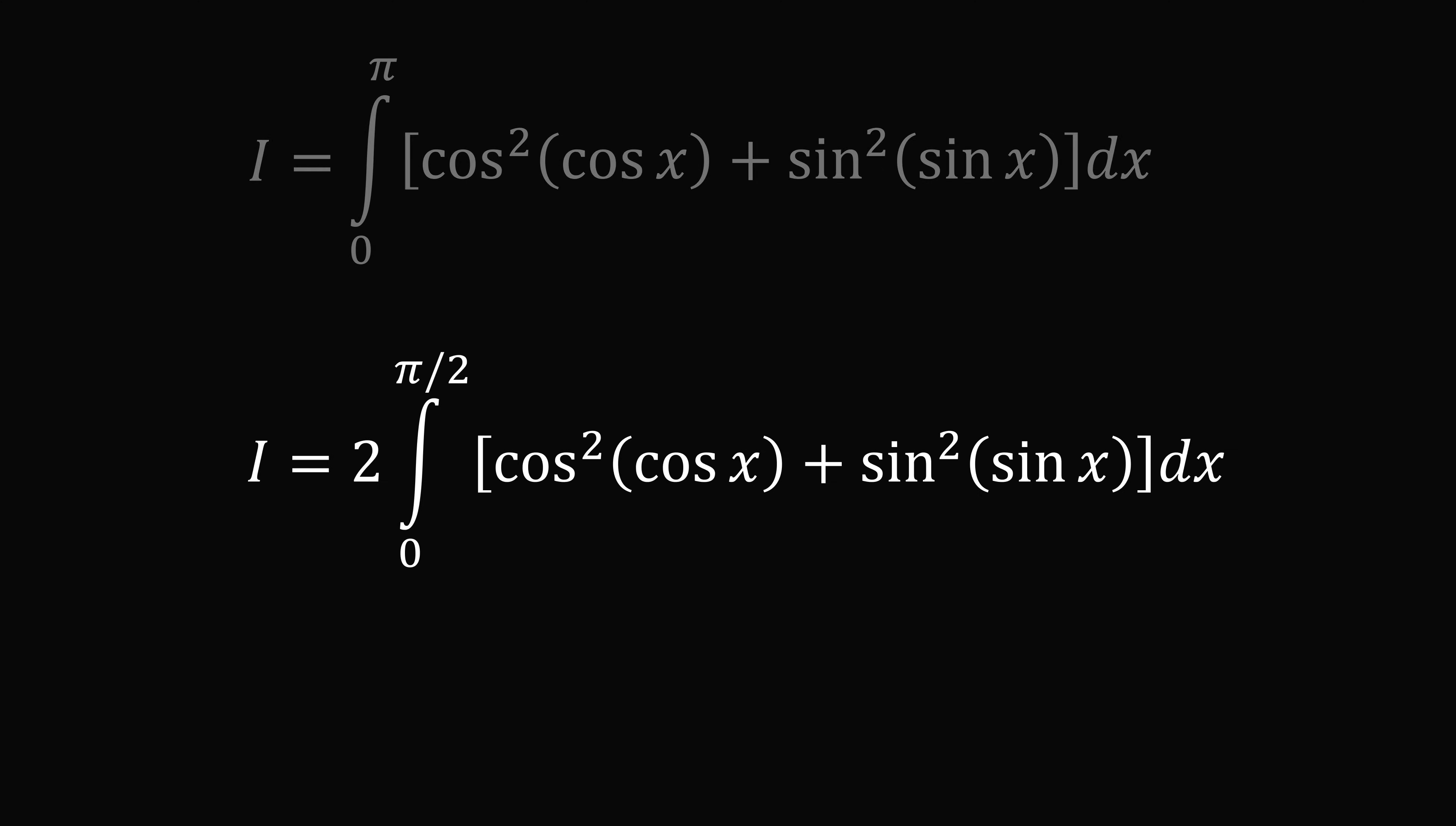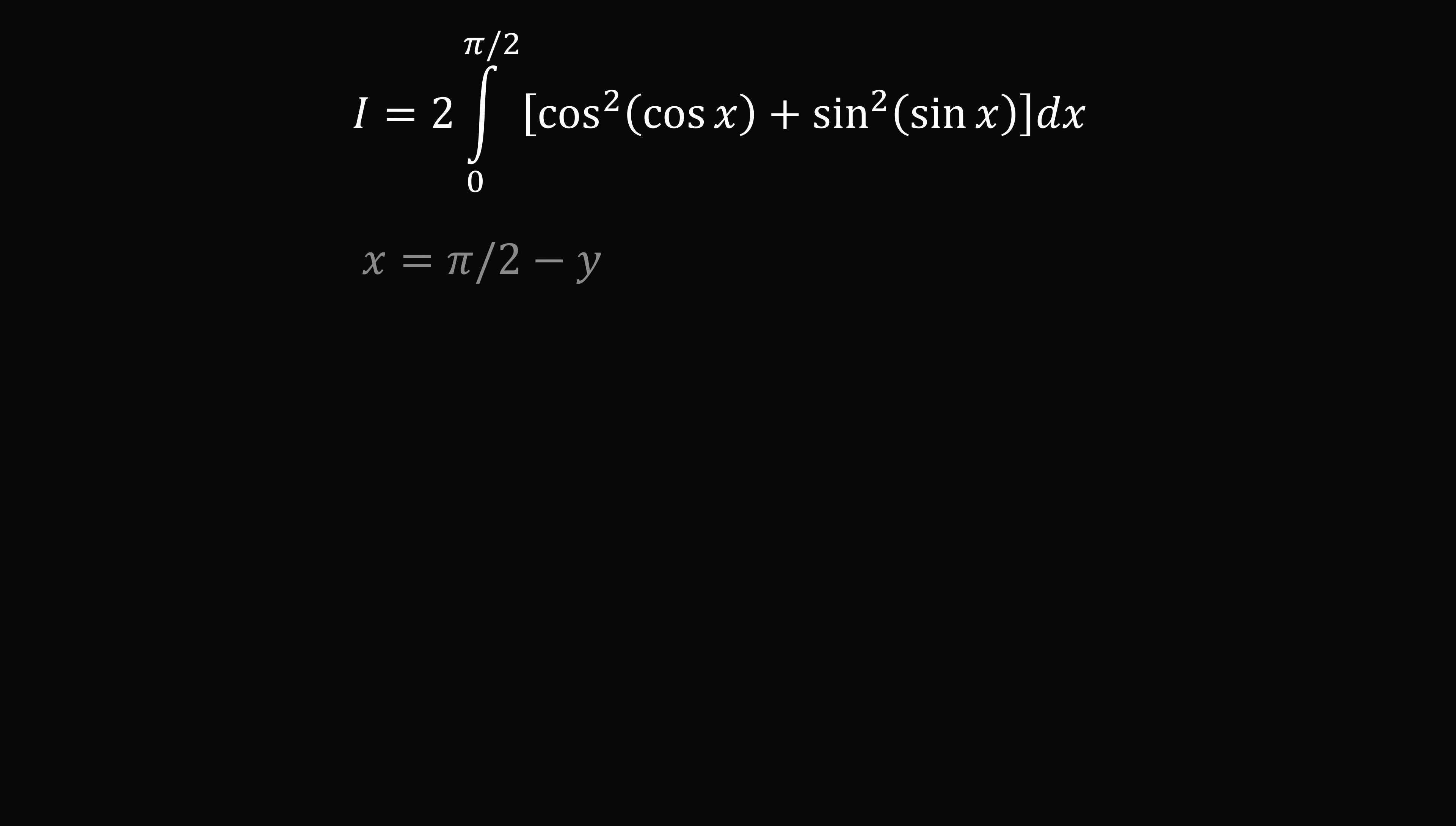So now let's do a change of coordinates. Let's say that x is equal to pi over two minus y. This means dx is equal to negative dy.